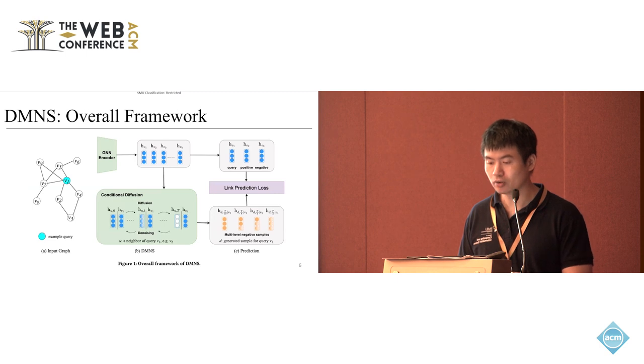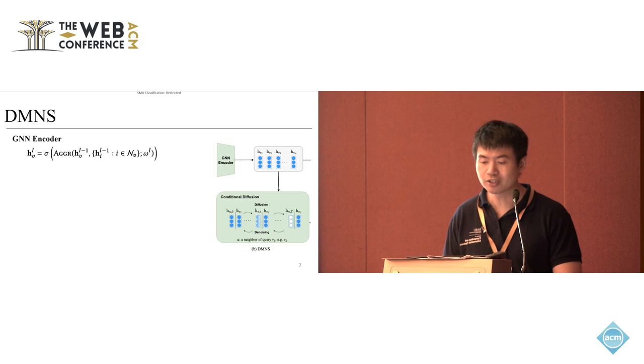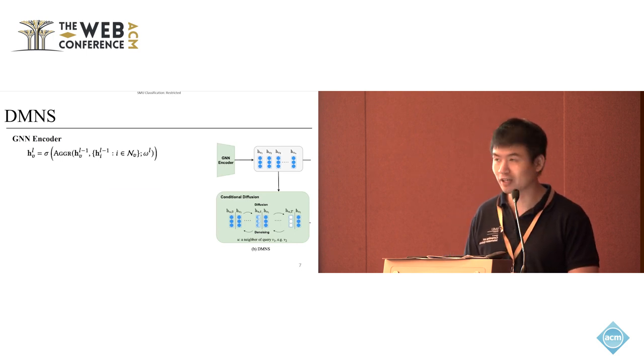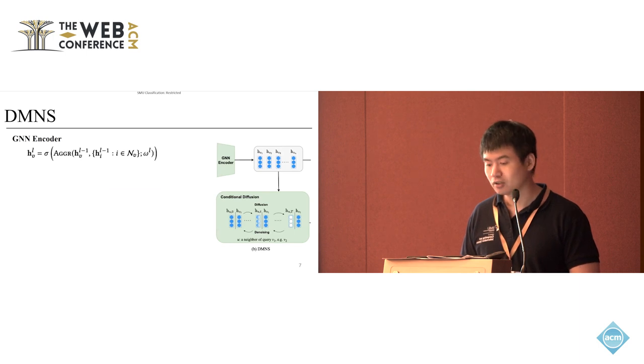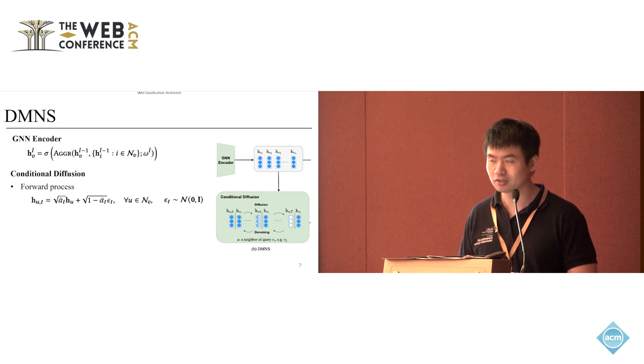In this approach, we have the GNN backbone—graph neural network—which can learn representations of the nodes. The representations learned from the nodes will be passed to a conditional diffusion model. This diffusion model will generate the negative samples, and then finally the negative samples together with the positive samples will be input to the link prediction loss for the final optimization. The GNN encoder backbone is flexible—it can be any graph neural network.